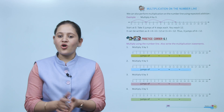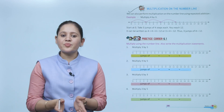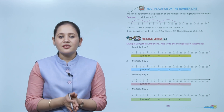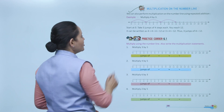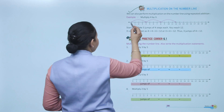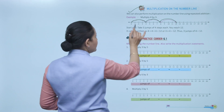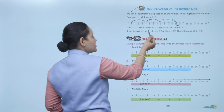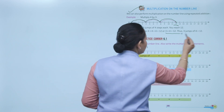Next: multiplication on the number line. We can also perform multiplication on the number line using repeated addition. For example, multiply 4 by 3. Start at 0, take 3 jumps of 4 steps each. Every time we are jumping 4 steps, so we will reach number 12. That means 4 plus 4 plus 4, three times, equals 12, or 3 into 4 equals 12.